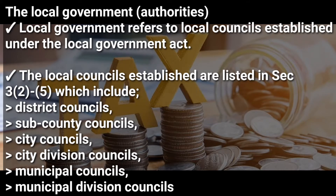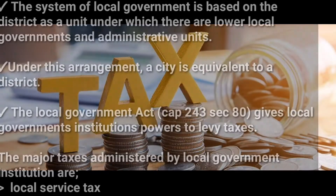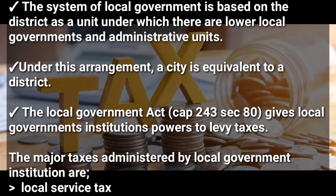The local government, also known as local authorities, refers to the local councils established under the Local Government Act. The local councils listed in section three of the Local Government Act include district councils, sub-county councils, city councils, city division councils, municipal councils, municipal division councils, and town councils. The system of local government is based on the district as a unit, under which there are lower governments and administrative units.